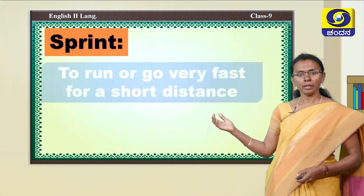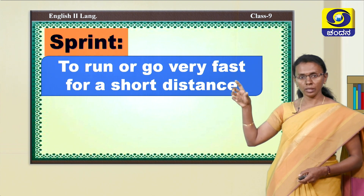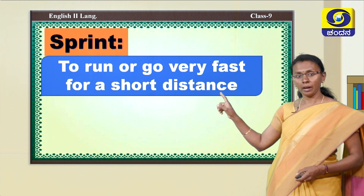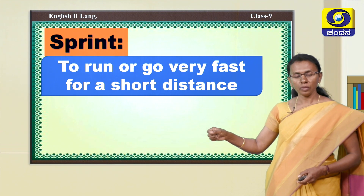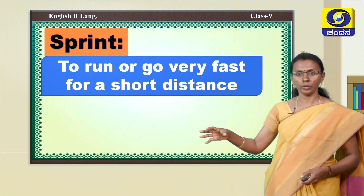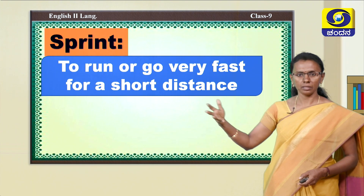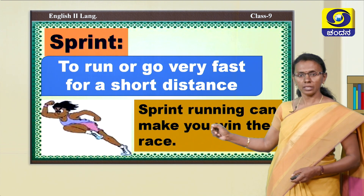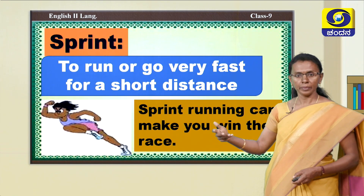The first word is 'sprint' — to run or go very fast for a short distance. Some just walk very slowly, but here it is not slow — it is very fast. For example in a sentence: 'Sprint running can make you win the race.' So you are not just a runner — a sprint runner means you are very fast.